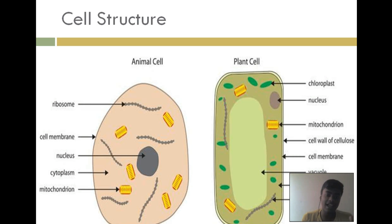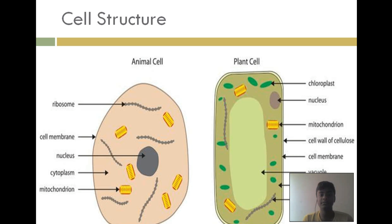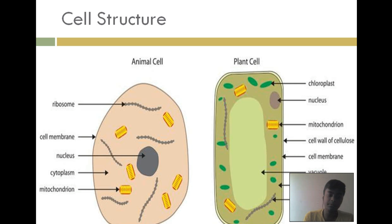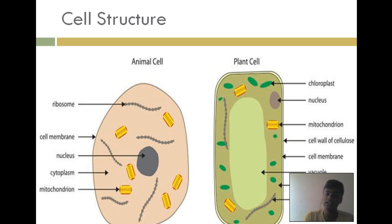Now let's move on to cell structure. Animal cells and plant cells have similarities but are also different. In unspecialized animal cells you can find a cell membrane, nucleus, cytoplasm, and mitochondria.